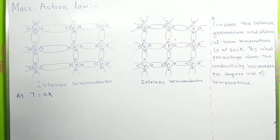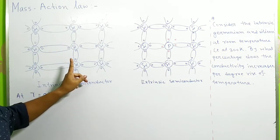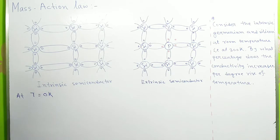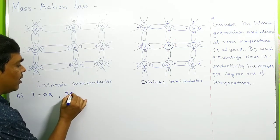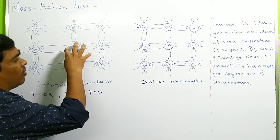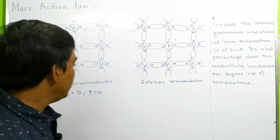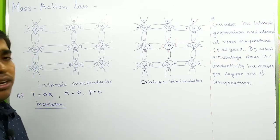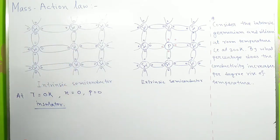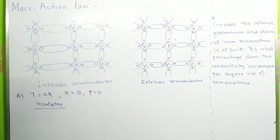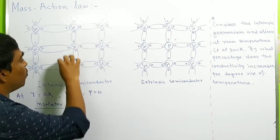At T equals zero Kelvin, all covalent bonds exist, so there are no charge carriers — the charge carrier count equals zero. That is why silicon does not conduct any current and behaves like an insulator at T equals zero Kelvin. Now if I increase the temperature of this crystal structure, these covalent bonds will break.